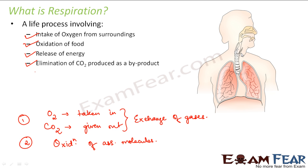In humans, oxygen is taken in through the nostrils and reaches the lungs. From the lungs, oxygen reaches the blood, and from the blood it reaches all the cells. That is how oxygen is taken in. How this transfer actually takes place — how oxygen reaches from nostrils to lungs, from lungs to blood, and from blood to cells — is what we are going to study in the coming slides.